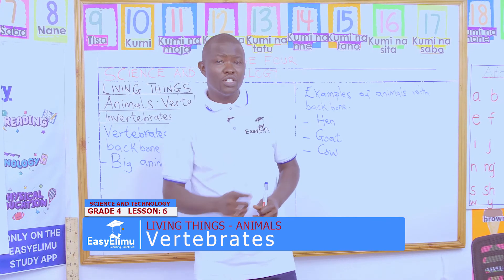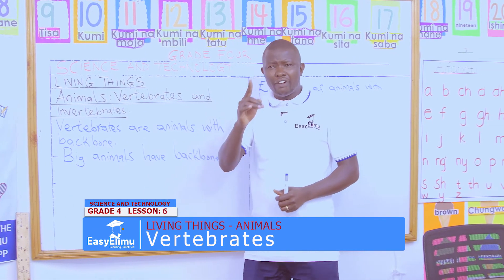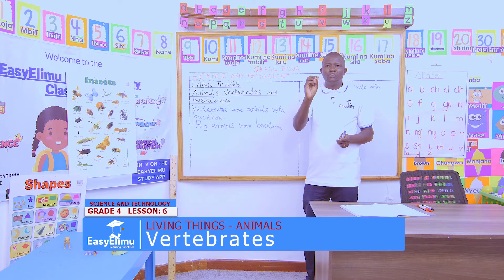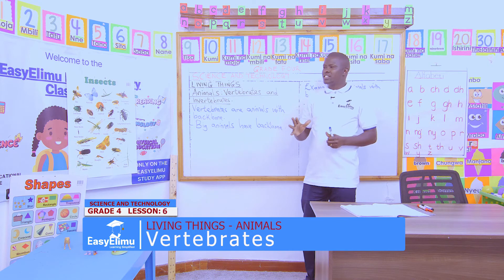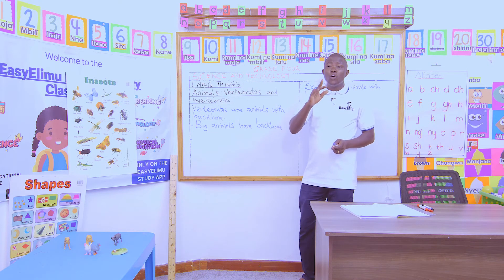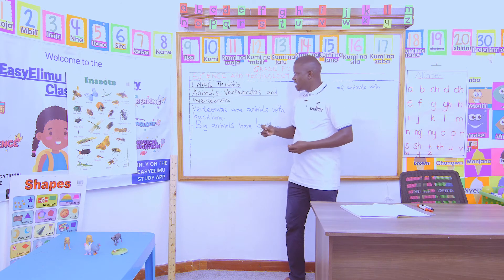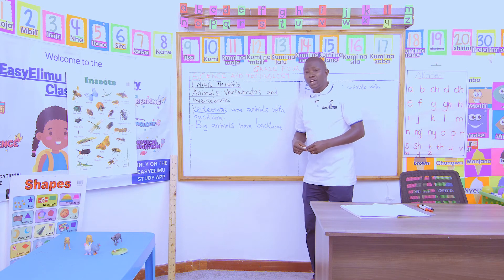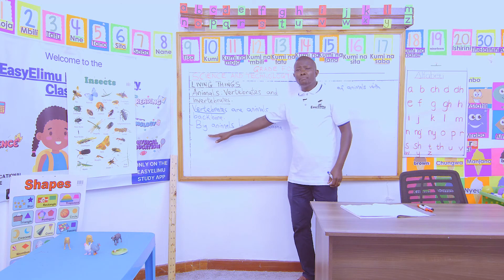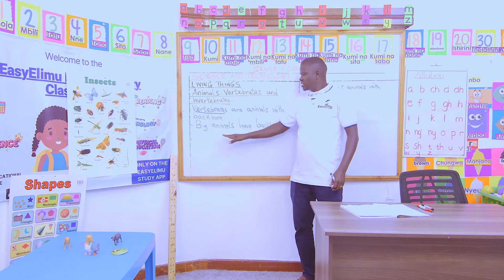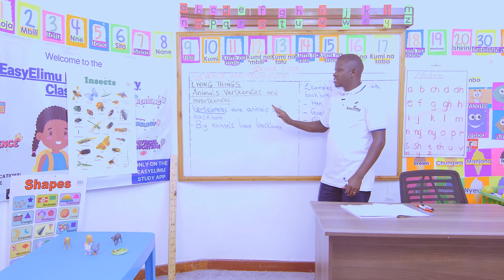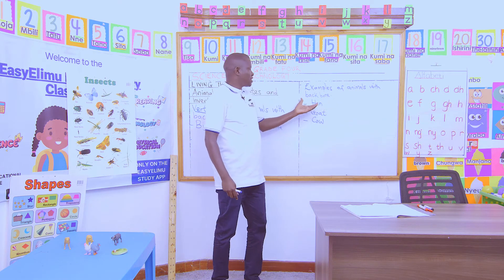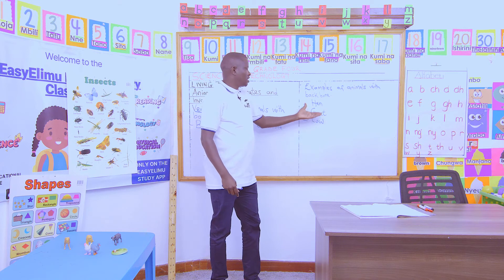My reminder for you today is this: if an animal has backbone, or when you eat meat and you find a bone, that animal is categorized under vertebrates because it is an animal with backbone. Almost every big animal is categorized as an animal with a backbone, so we call it a vertebrate. And in our groups, we have discussed some examples of animals with a backbone.